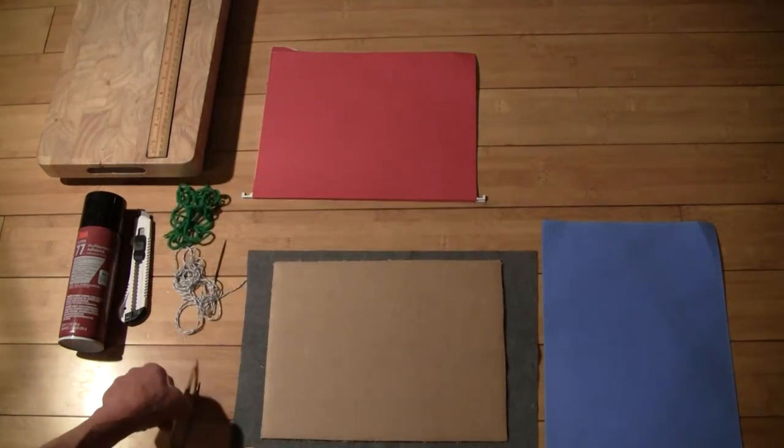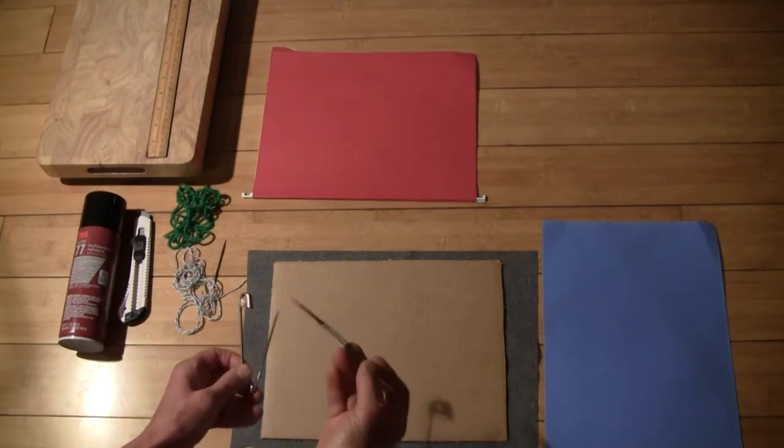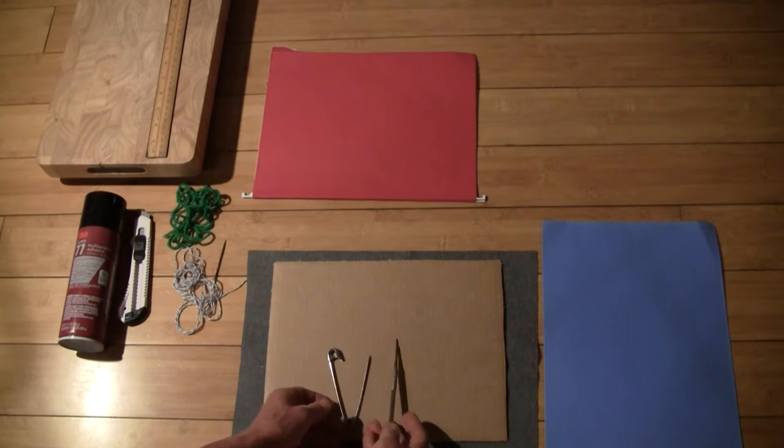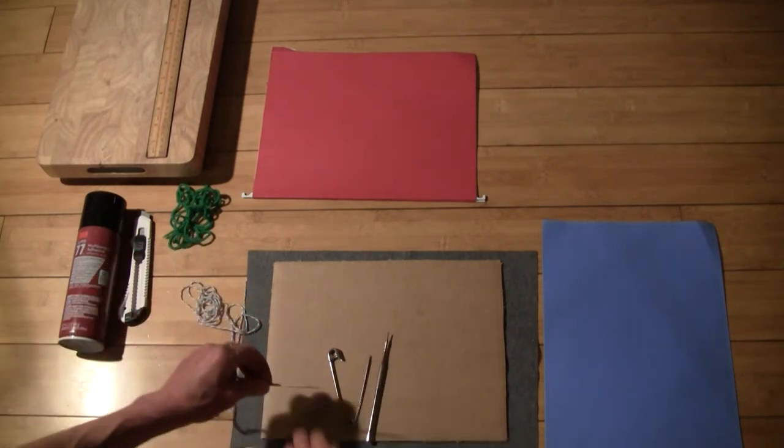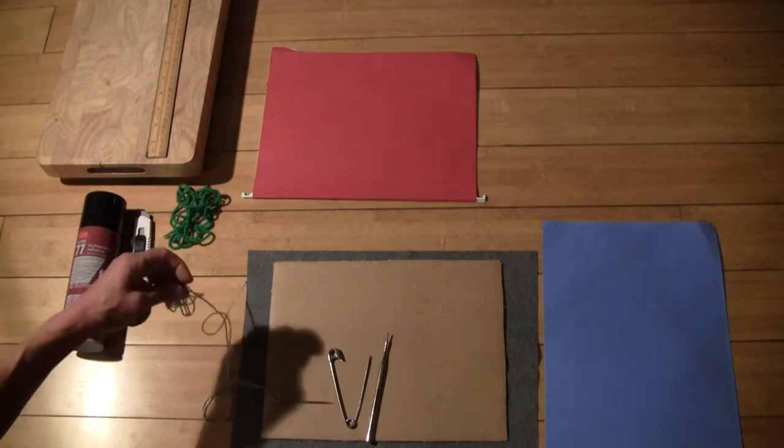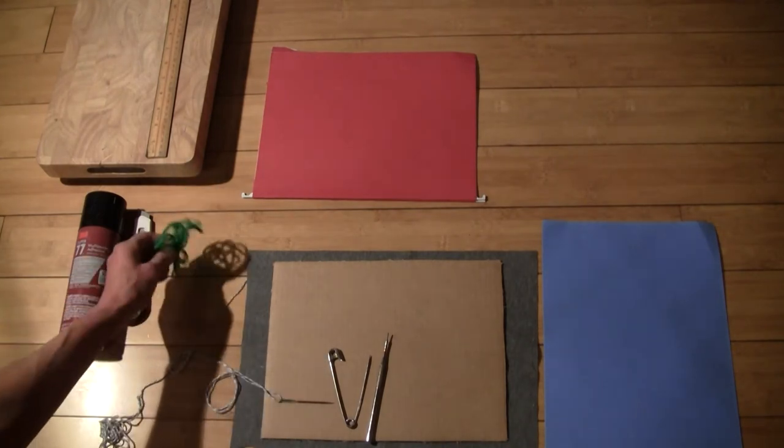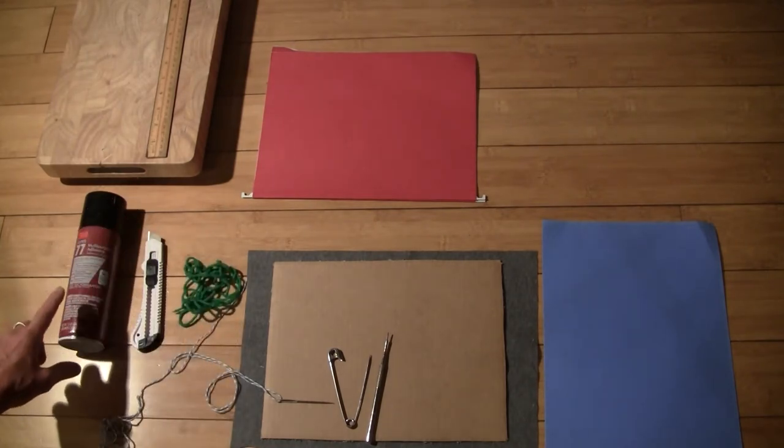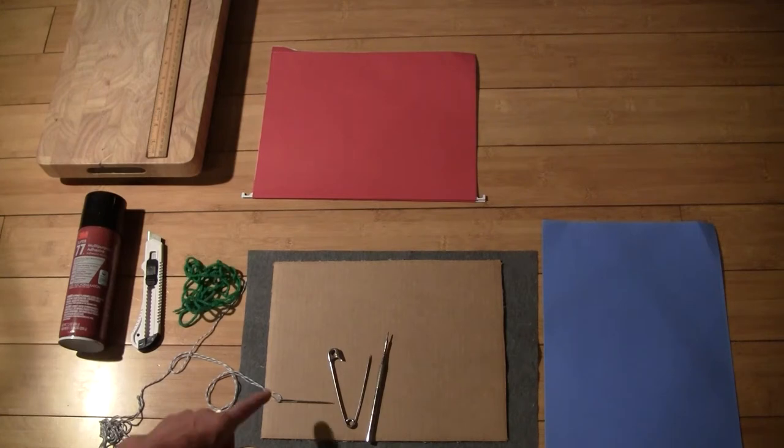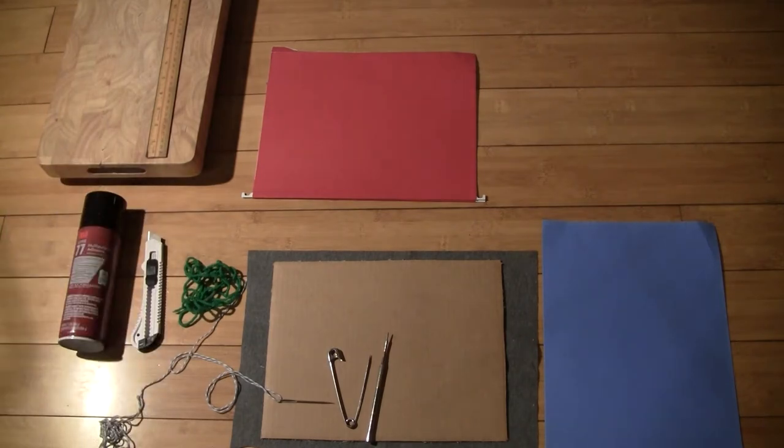For tools, you're going to need an awl or something really sharp, so I found that. Or this could work too for poking holes. You're going to need a big needle like this with some yarn or twine, something that's bigger than thread. An exacto knife, a ruler. I found this spray adhesive. You could also use watered down Elmer's for a fabric. And then something to work on so you don't wreck the surface that you're working on.